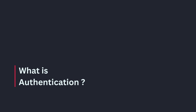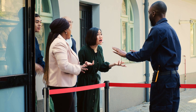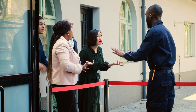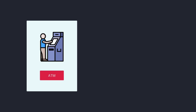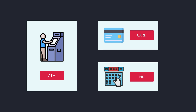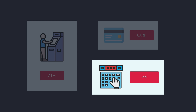Before we jump into code, let's understand what authentication really is. Think of authentication like the security guard at an exclusive event — just having a ticket isn't enough, you need to prove you're the person whose name is on the ticket. When you go to your bank's ATM, you need two things: your card and your PIN. The card tells the bank who you claim to be, but the PIN proves that you really are that person. Without this two-step process, anyone could take your card and access your money.